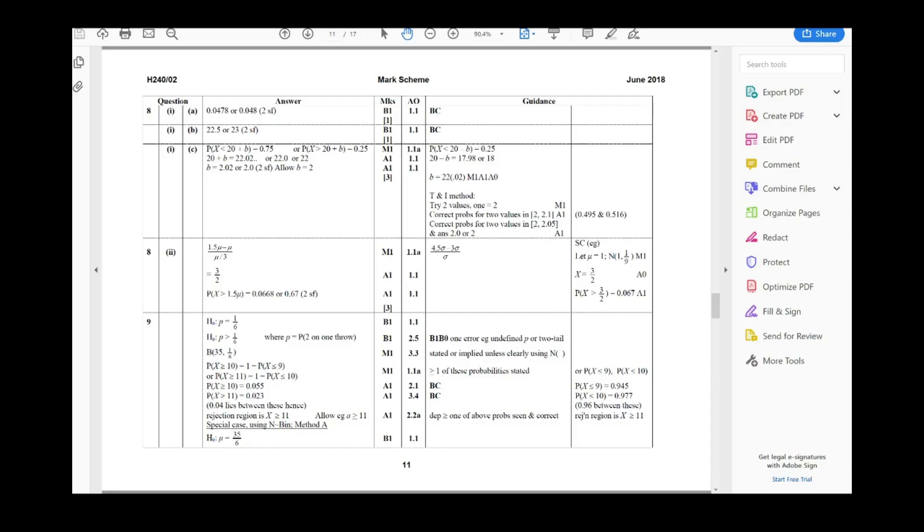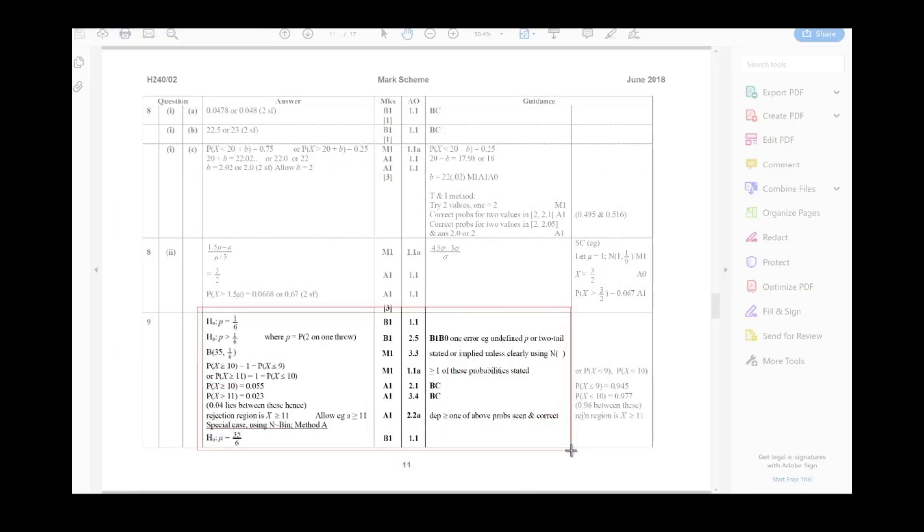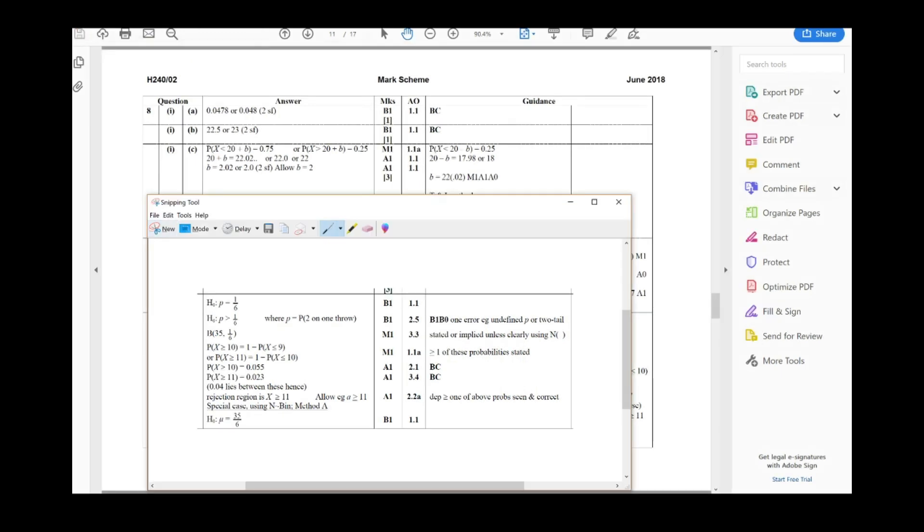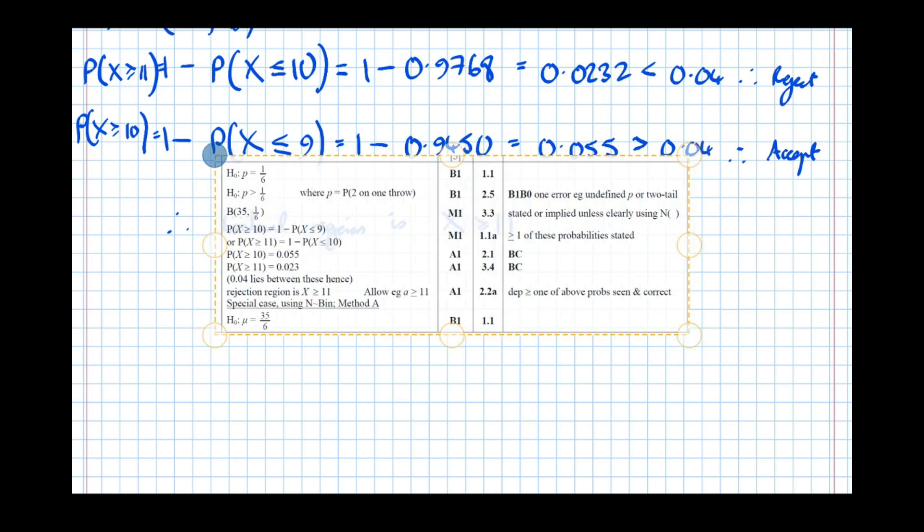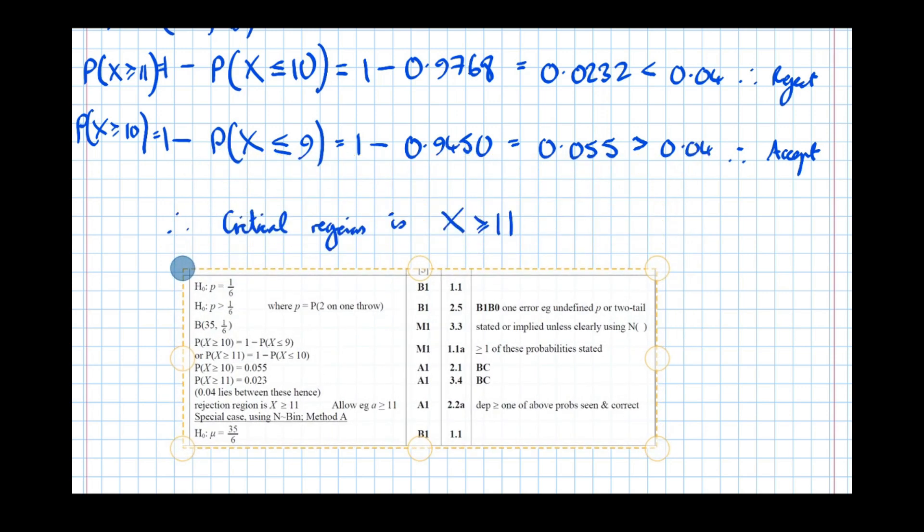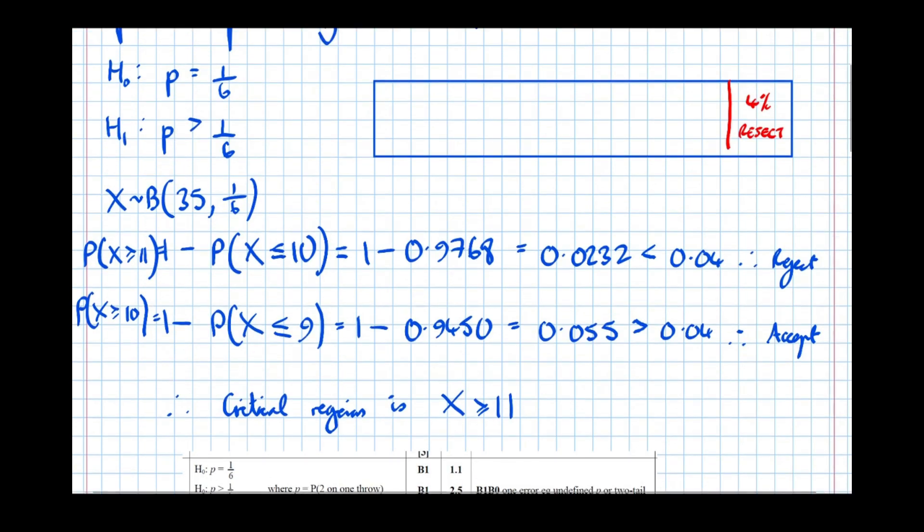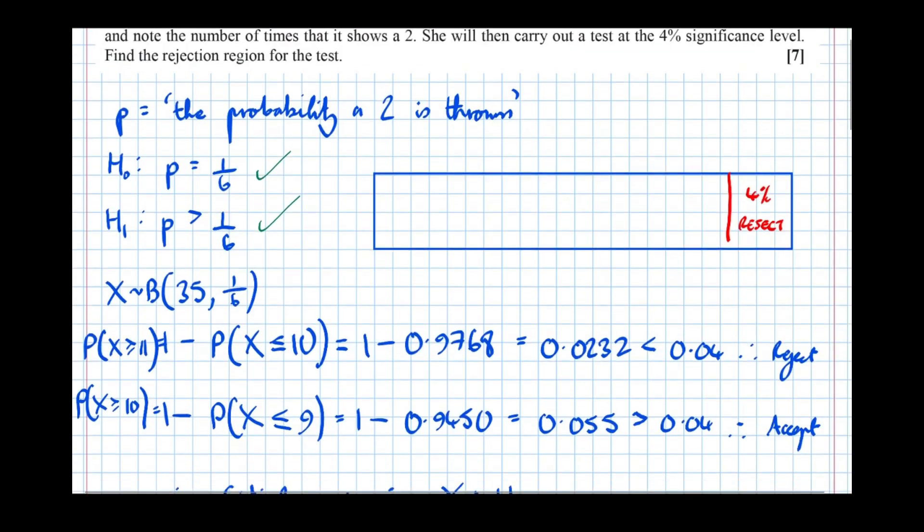So here's the mark scheme here. Let's take a snapshot of that and put it just there. So here, we see that one mark for H naught as P equals a sixth, and another mark for P greater than a sixth. However, it says we do lose one mark if we don't define P. So if we don't define what P is in words, we can't get that second mark. So yes, there's two marks, and I only get that second mark because I've defined P in words, according to the mark scheme.